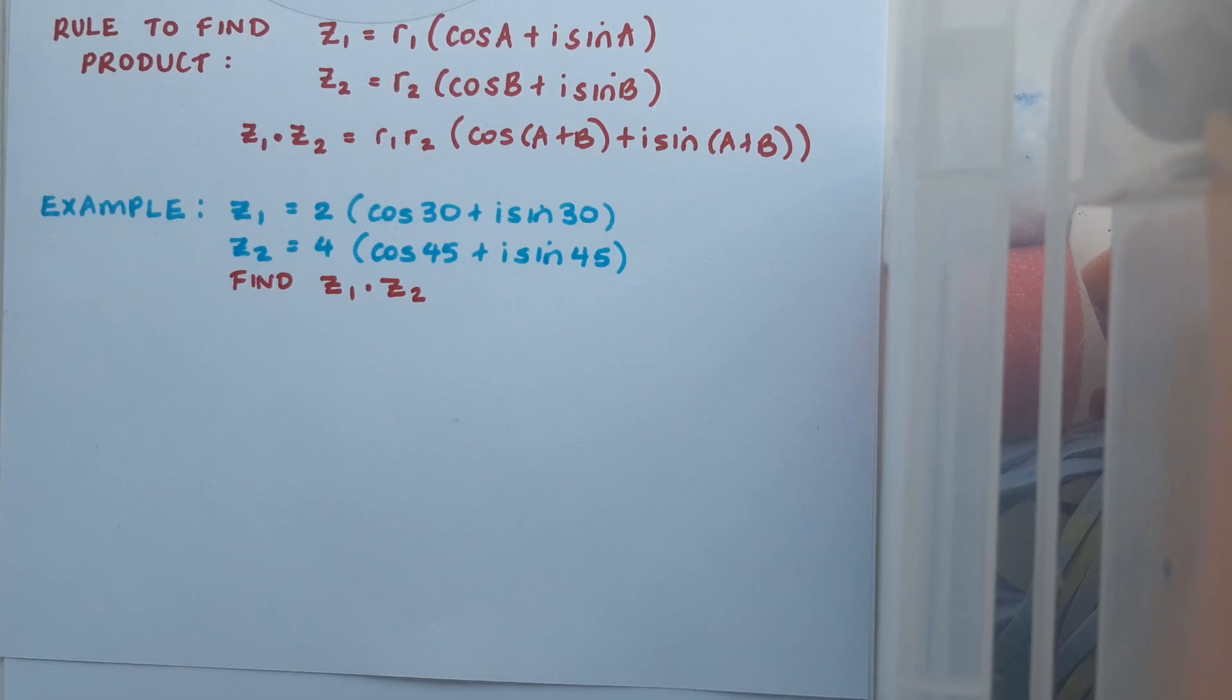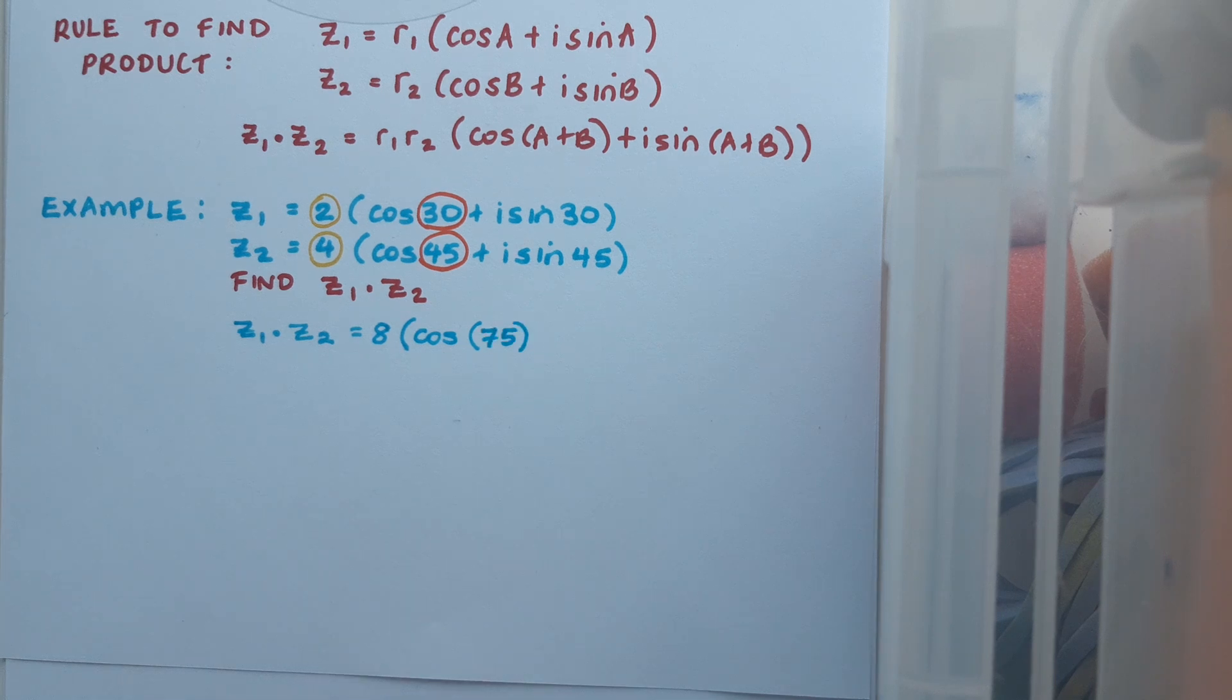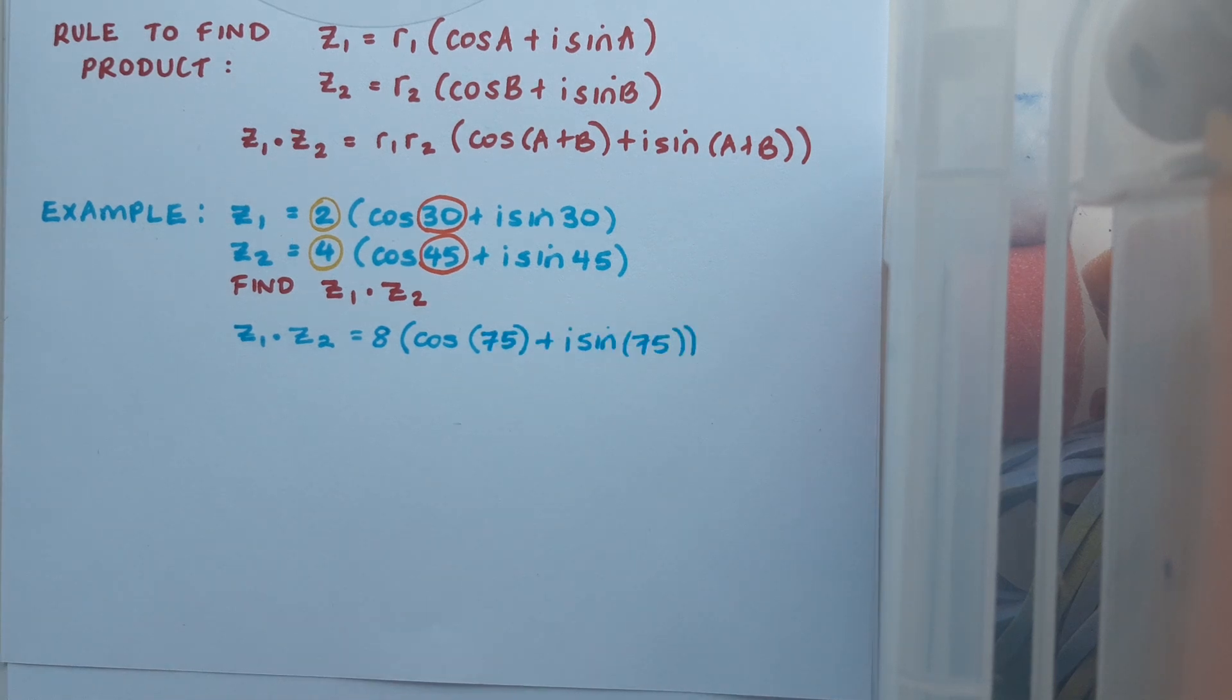So let's look at this now in action. Here's my example: z1 in polar form is 2(cos 30 + i sin 30) and z2 is 4(cos 45 + i sin 45), and I want to find z1z2. So all I have to do is multiply my moduli, 2 by 4 which gives me 8, and then add my angles, 30 and 45, which gives me 75. You can see how much quicker and simpler it is than going through all the long multiplication process with the Cartesian form.